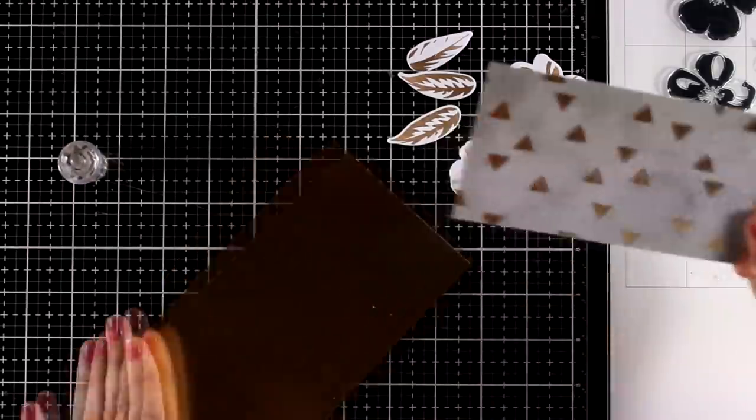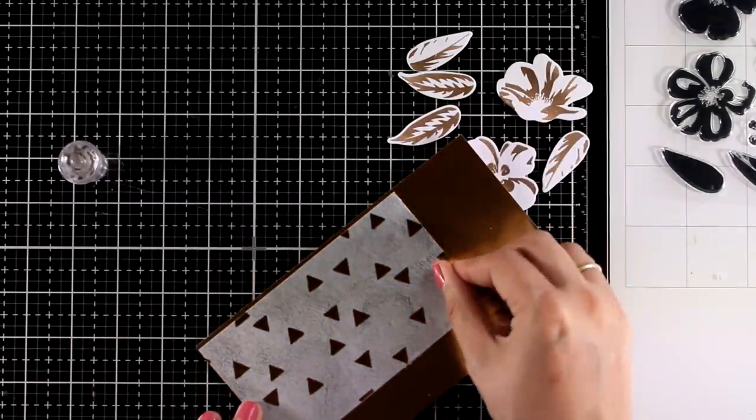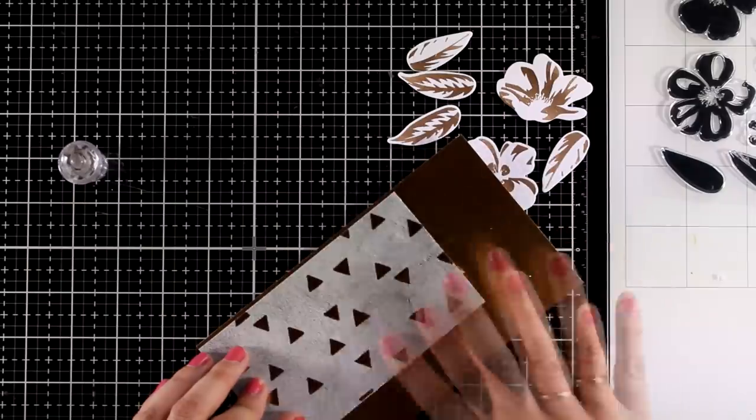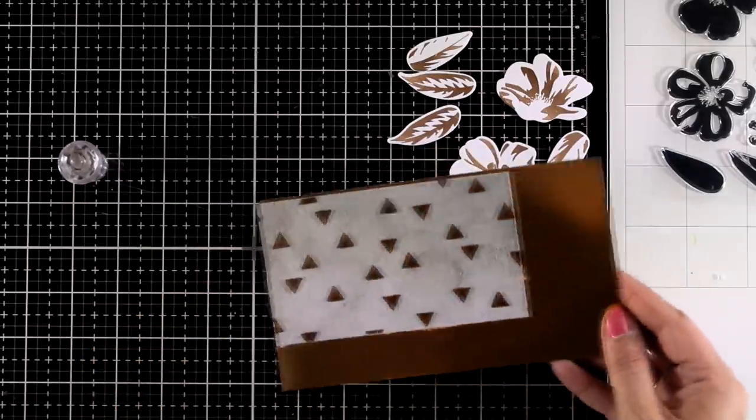Now I'm working with a panel that has the washi tape and I'm going to stick that on a gold-foiled cardstock. I just want to have two thin strips of gold on top and at the bottom of this strip.